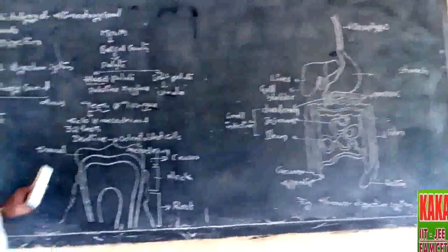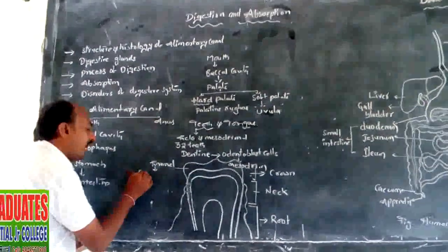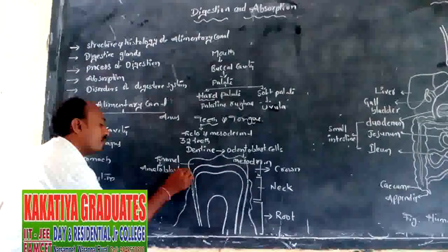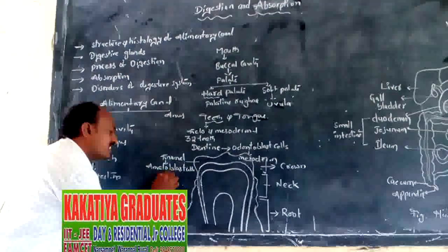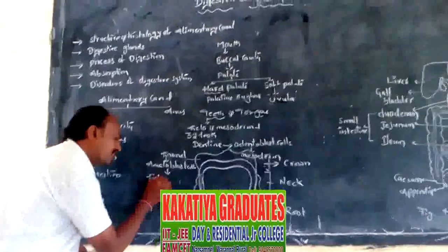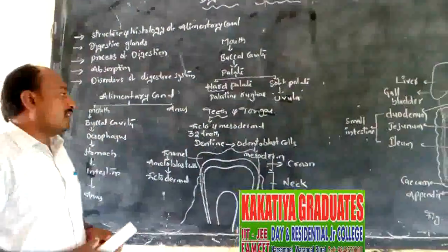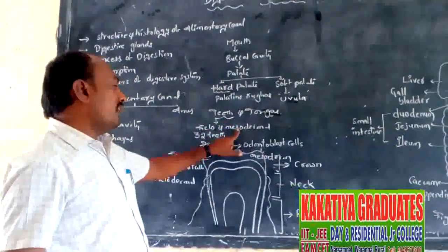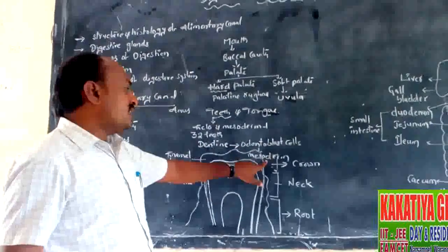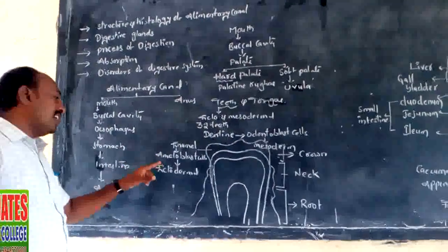The visible or exposed part of the crown is covered with a layer called enamel, which is the hardest substance of our body. Enamel is secreted by ameloblast cells, which originate from ectodermal origin. Hence the teeth are called of ecto-mesodermal origin — dentine originates from the mesoderm and enamel is secreted by ameloblast cells from the ectoderm.